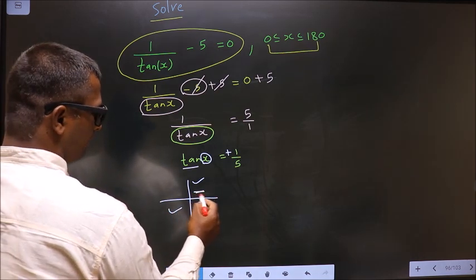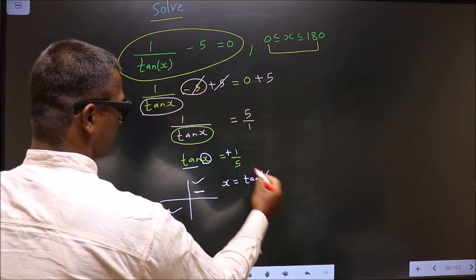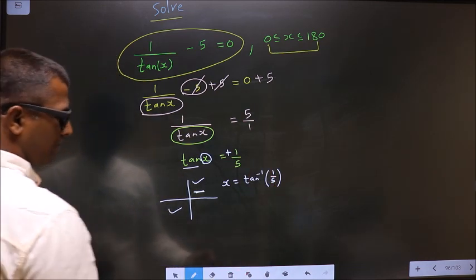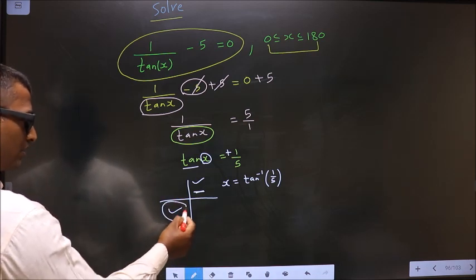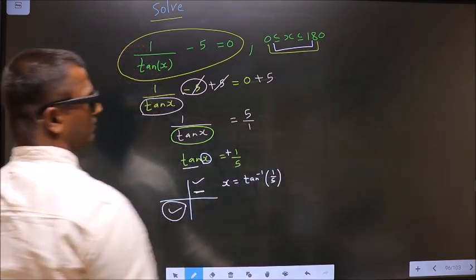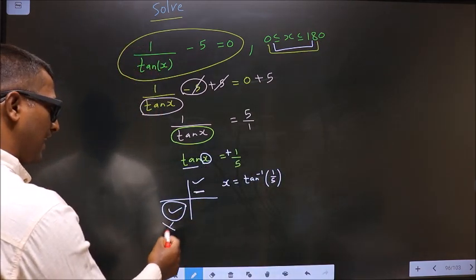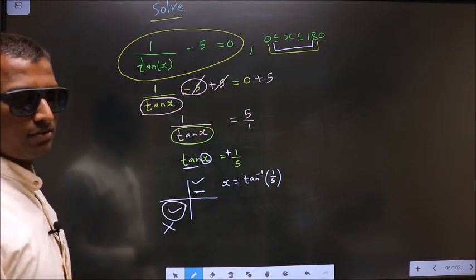To get an angle in the first, we do directly tan inverse 1 by 5. Now angle in the third quadrant does not lie in this interval. That means we don't need to find this angle since it doesn't lie in the interval.